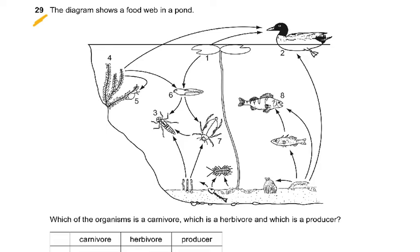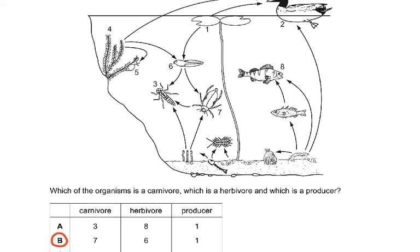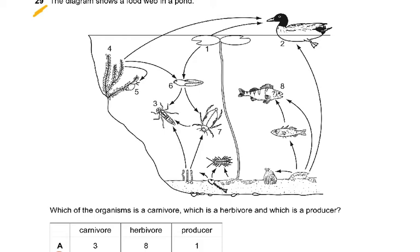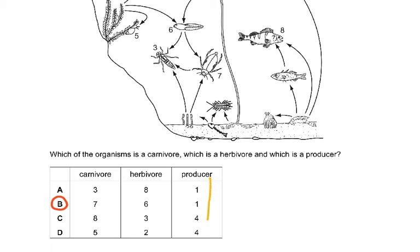Question 29: The diagram shows a food web in a pond. Which of the organisms is a carnivore, which is a herbivore, and which is a producer? Now that was a technically difficult question. Of course, four is the producer. We are 100% sure that four is a producer. But what else is a producer? Let's look at the other things which are producers. One is a plant that is also a producer. So four or one had to be a producer.